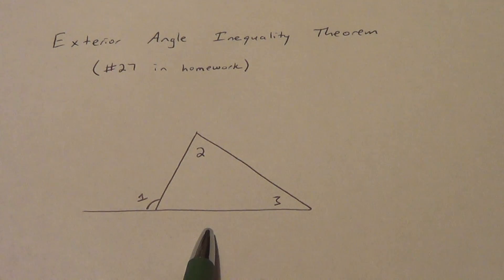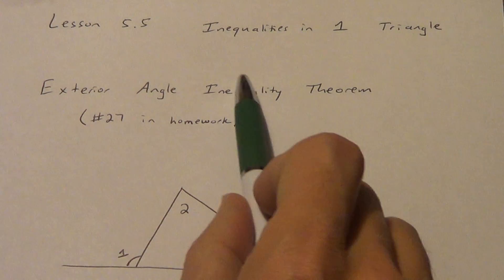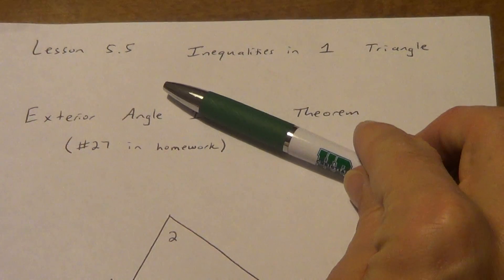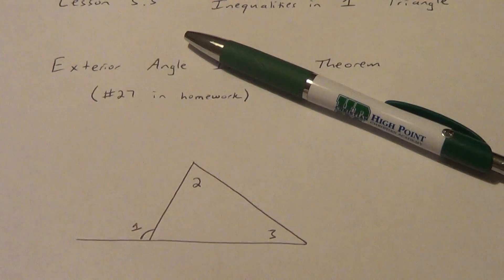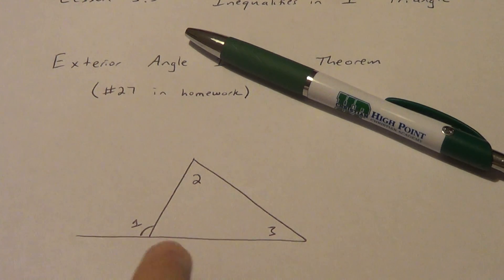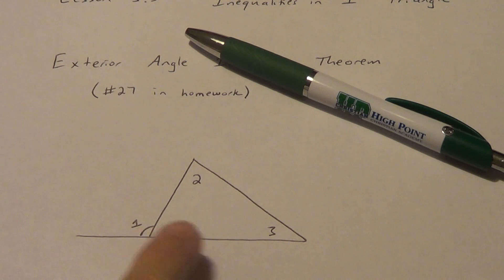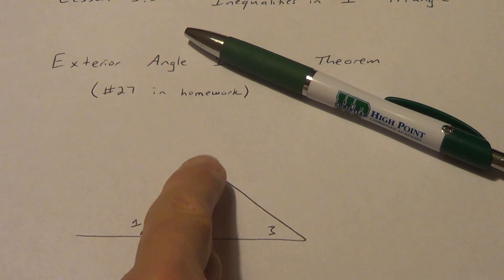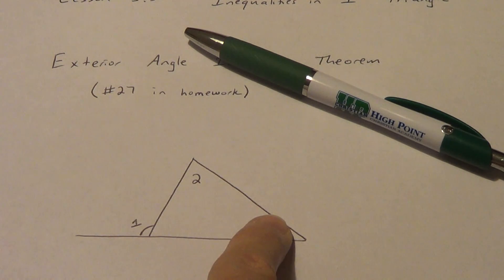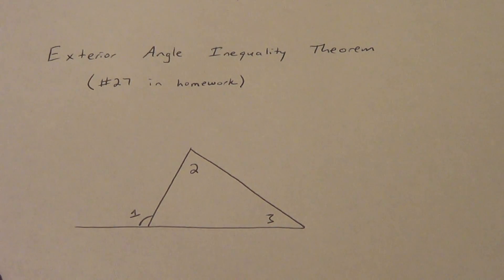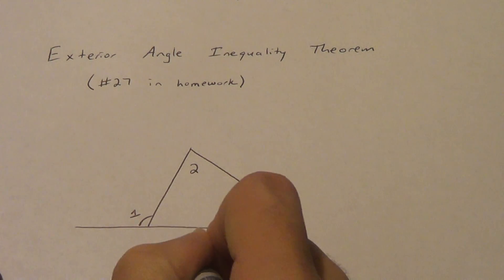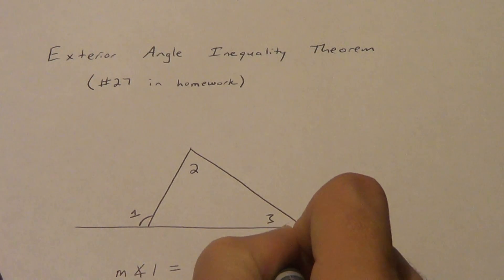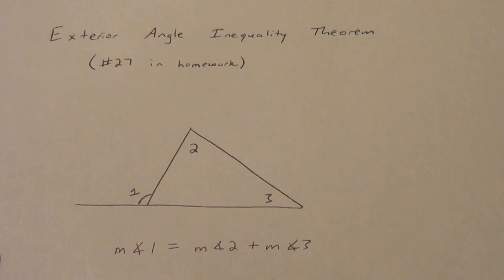We actually learned about this picture and something called the exterior angle theorem — didn't have any inequality in here. The exterior angle theorem talked about this: see if you guys remember what it said about these angles. It talked about an exterior angle — this one out here — being equal to the far away, the remote, or what the book calls the non-adjacent interior angles. So the measure of angle one equaled the measure of angle two plus the measure of angle three.